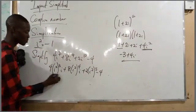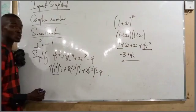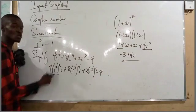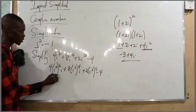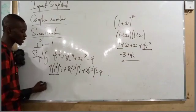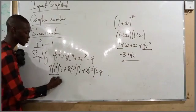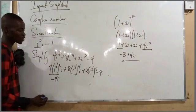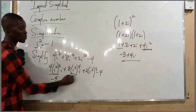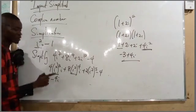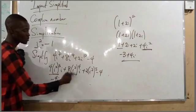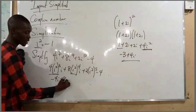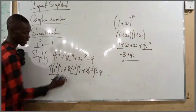Since i² equals minus 1: minus 1 cubed is minus 1, so 4 times minus 1 gives minus 4i. Minus 1 to the power of 4 is 1, so 1 times 8 gives plus 8i. And minus 1 to the power of 5 is minus 1, so 2 times minus 1 gives minus 2.